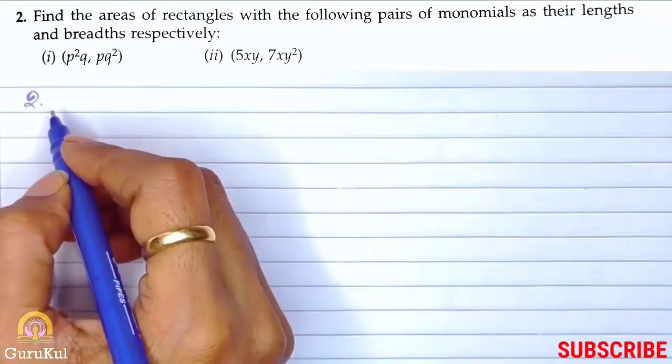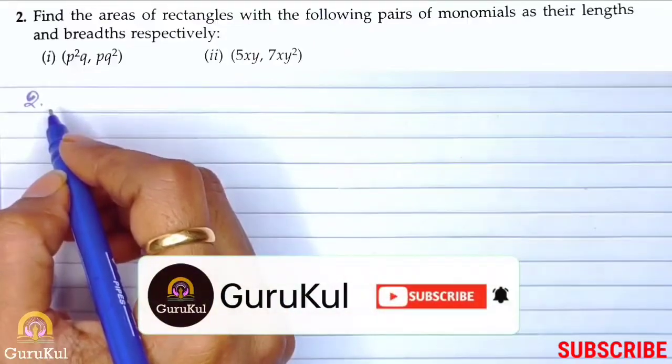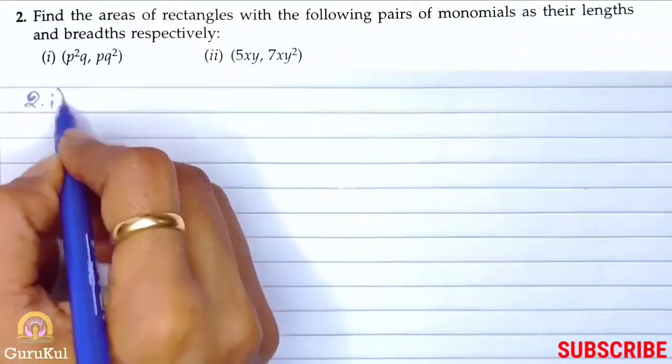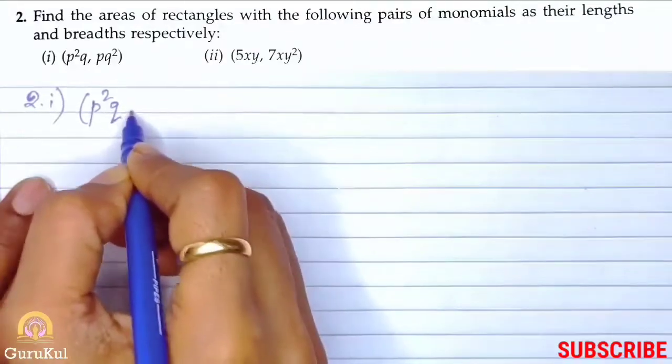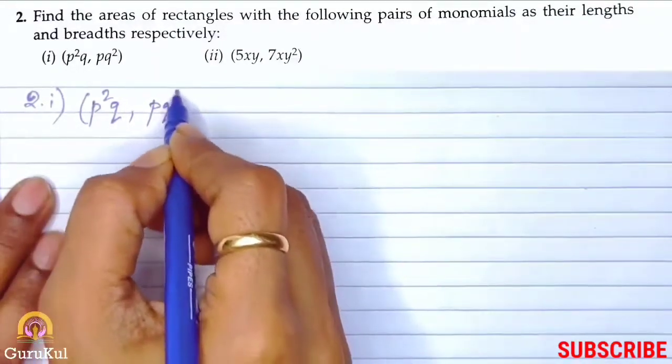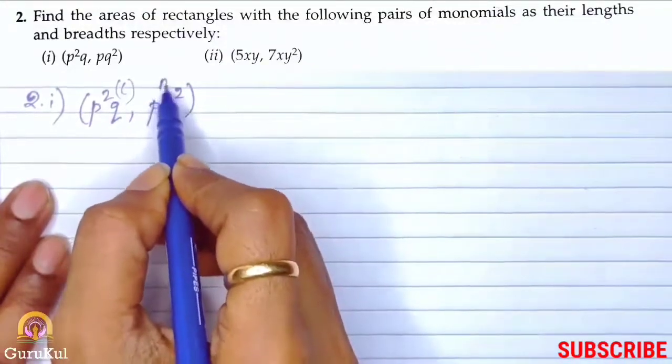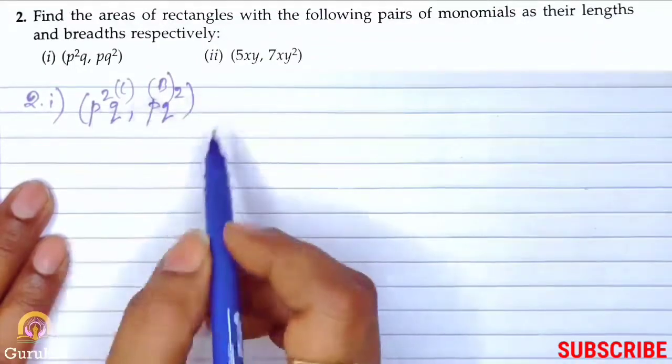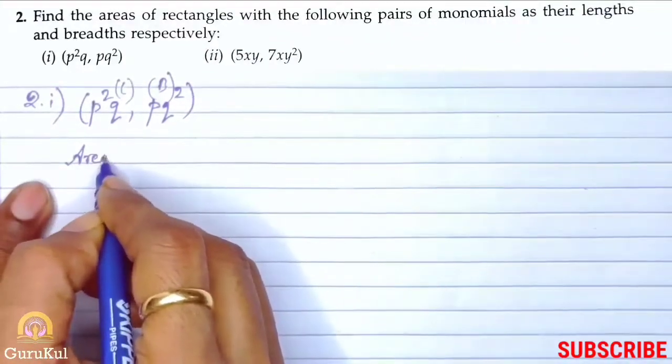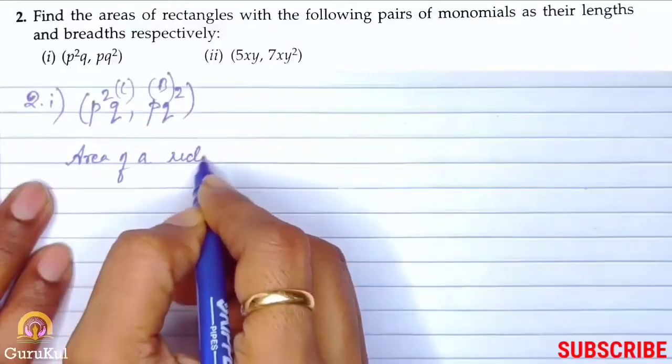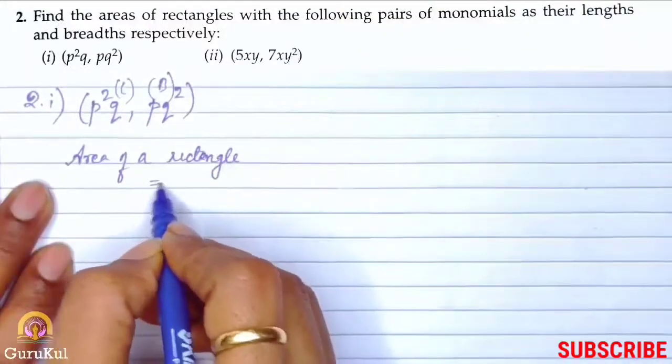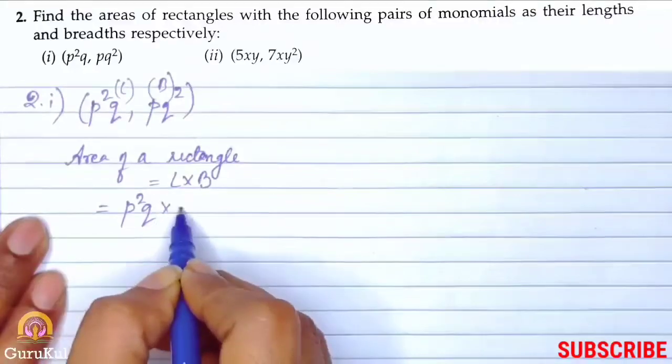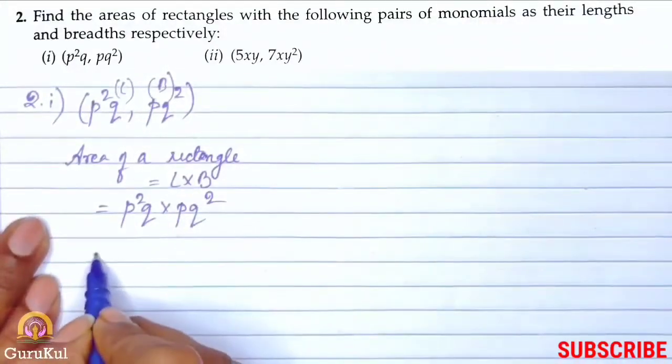Question number 2. We need to find the area of rectangle with the following pairs of monomials as their length and breadth respectively. So the first one: it is p squared q, pq squared. So this is the length and this is the breadth, in order, because the question says respectively. Area of a rectangle we all know is length into breadth.